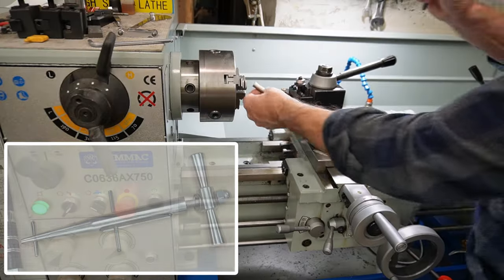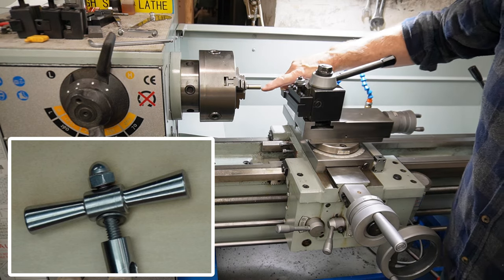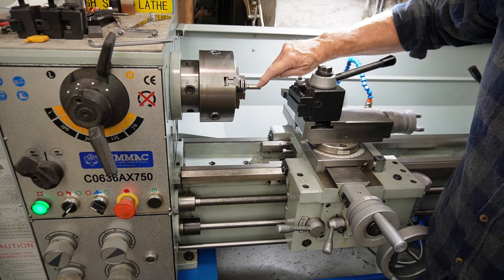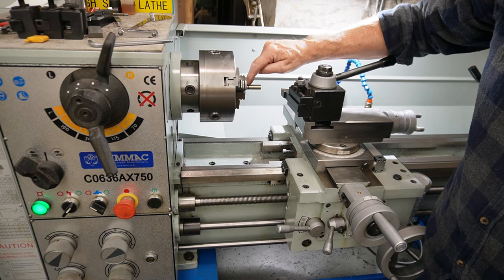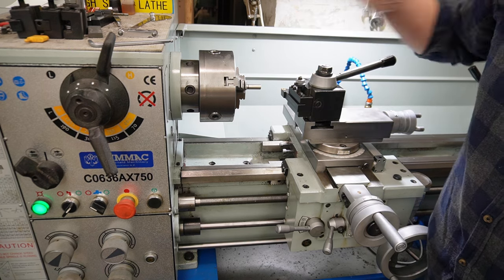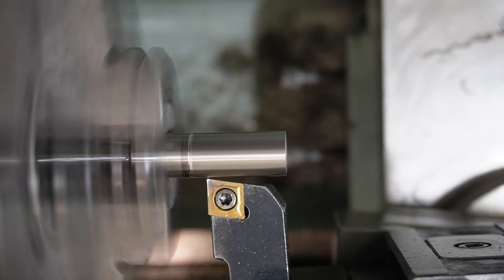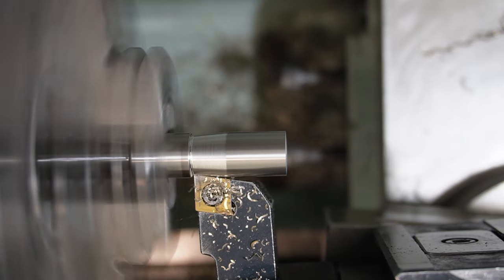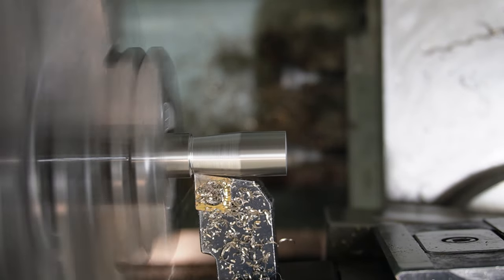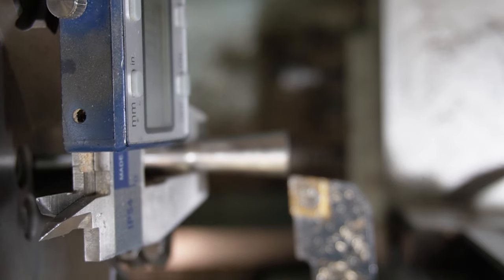We're going to now make the handle. Handle is going to be a butterfly type handle, so I'm going to face this off and then put a five degree taper running back in towards the centerpiece, then I'll flip it and do the other end.